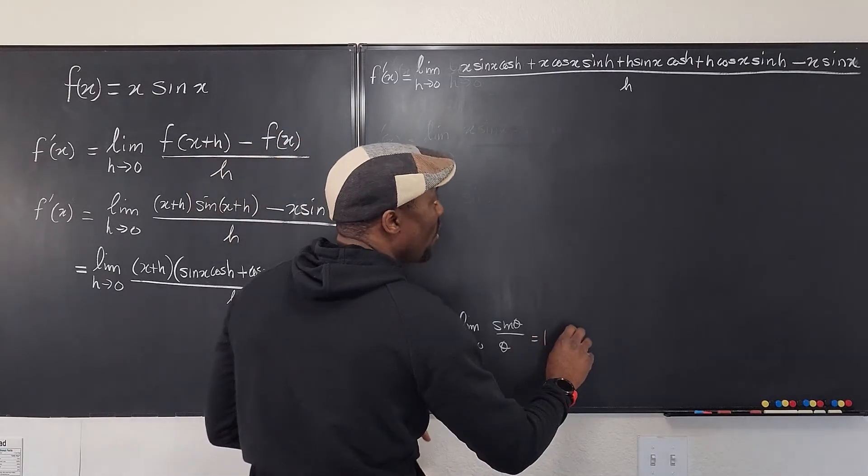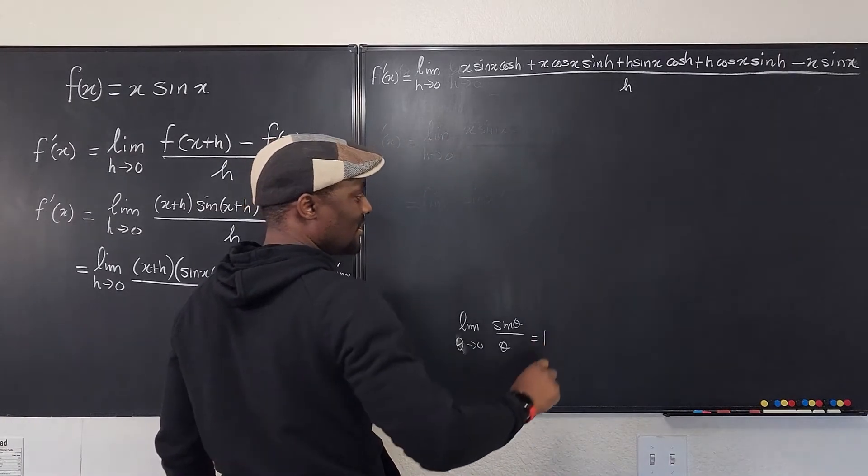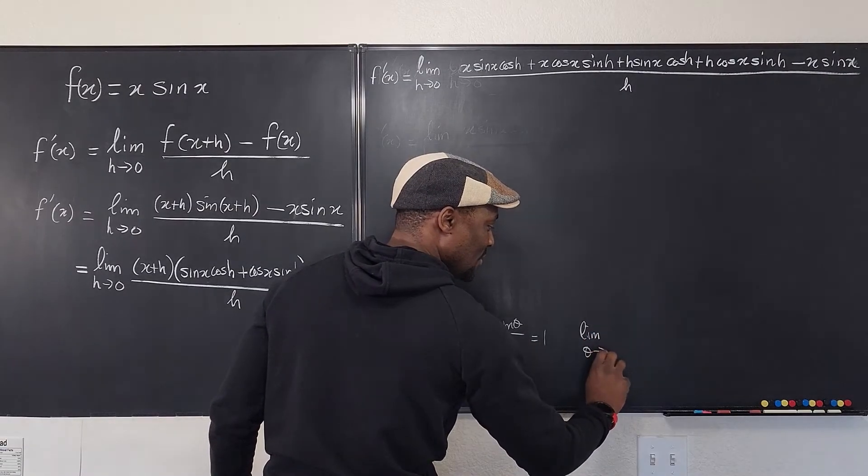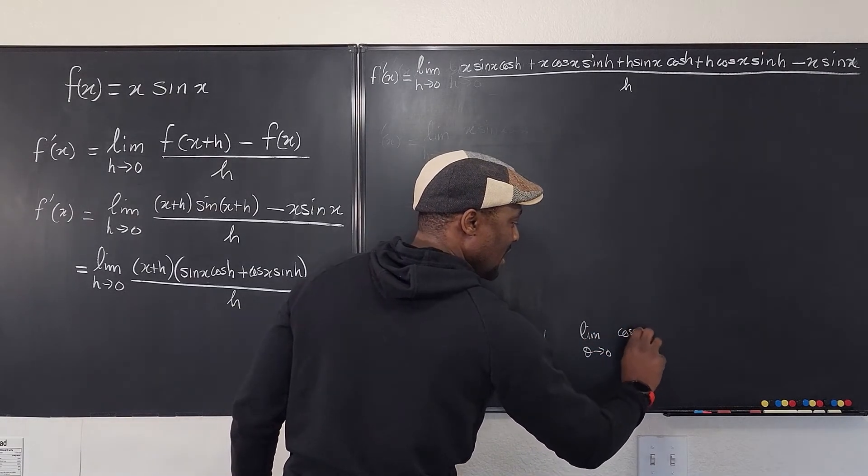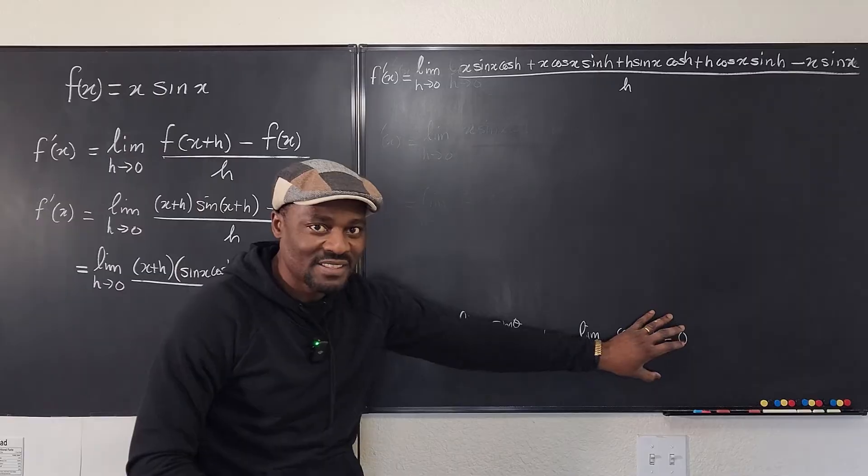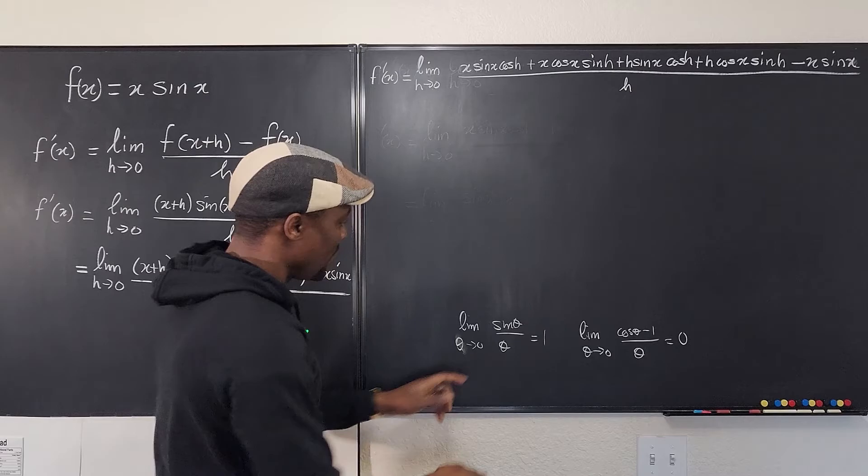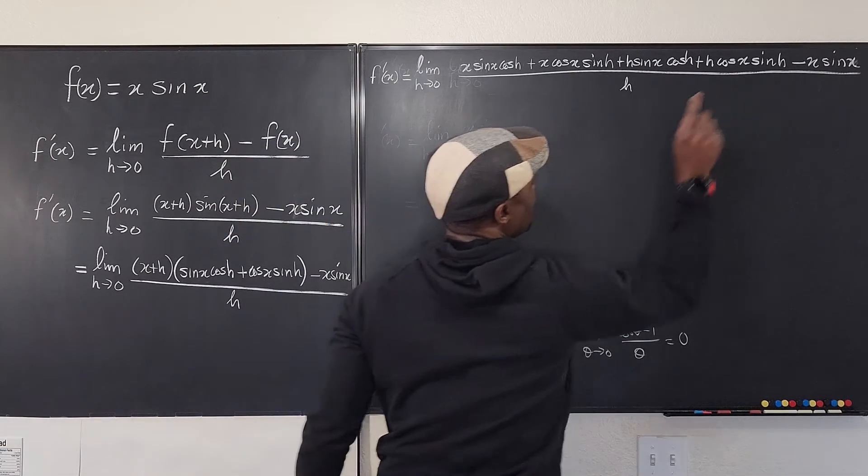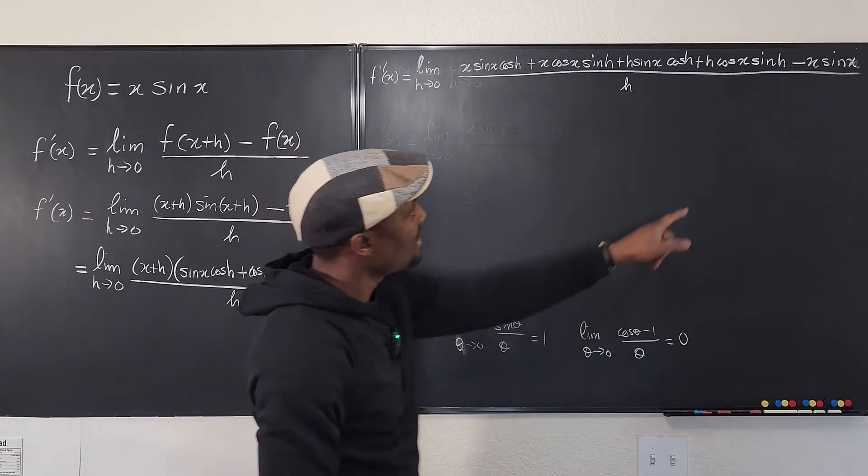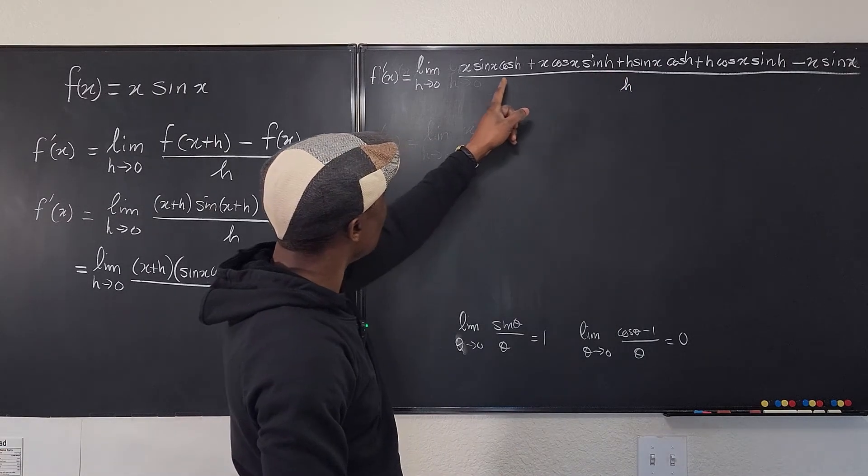And another identity I may want to look for, this one has x sin x and there's a minus. And the only identity that's close to that is the limit as theta goes to zero of cosine theta minus one over theta. We know this will go to zero. So if I can create this, I'll be brilliant. So firstly, I found two. I found this and I found this, but I need this minus to be combined with some cosine.